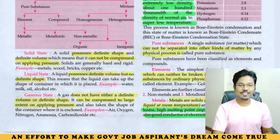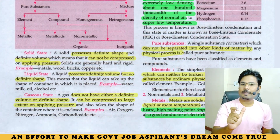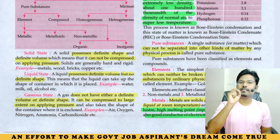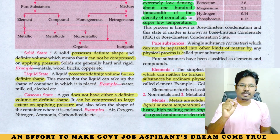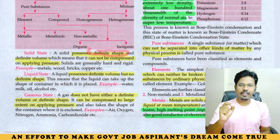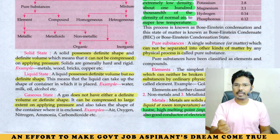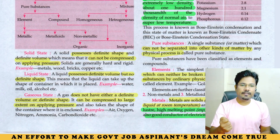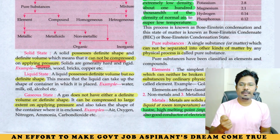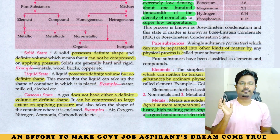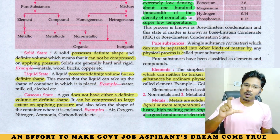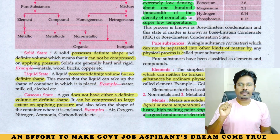Solid state: a solid possesses definite shape and definite volume, which cannot be compressed by applying pressure. A solid matter is hard and rigid.